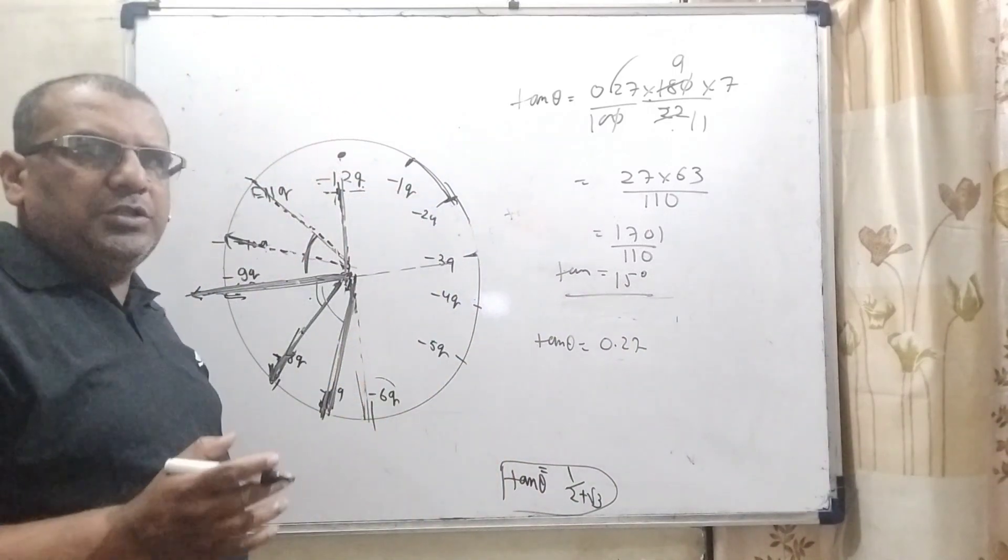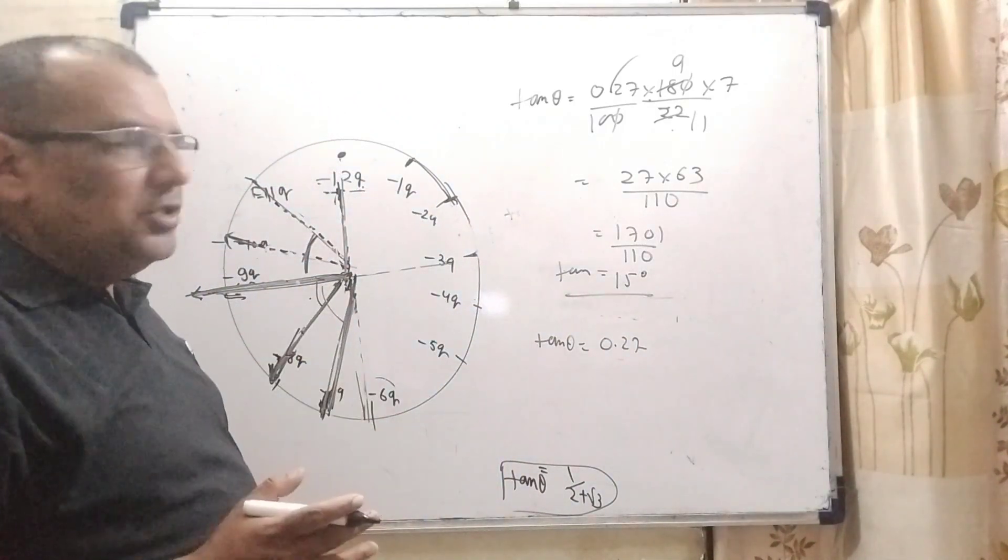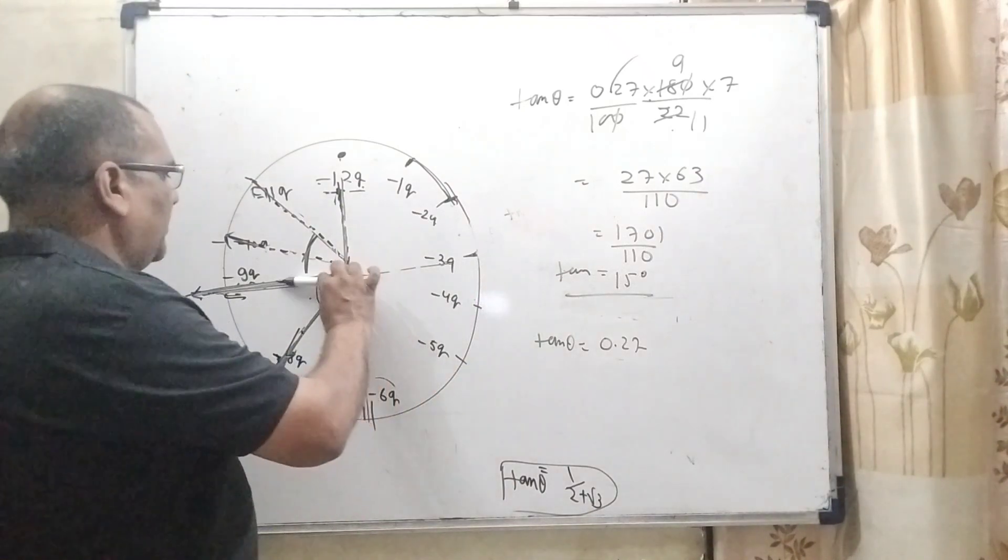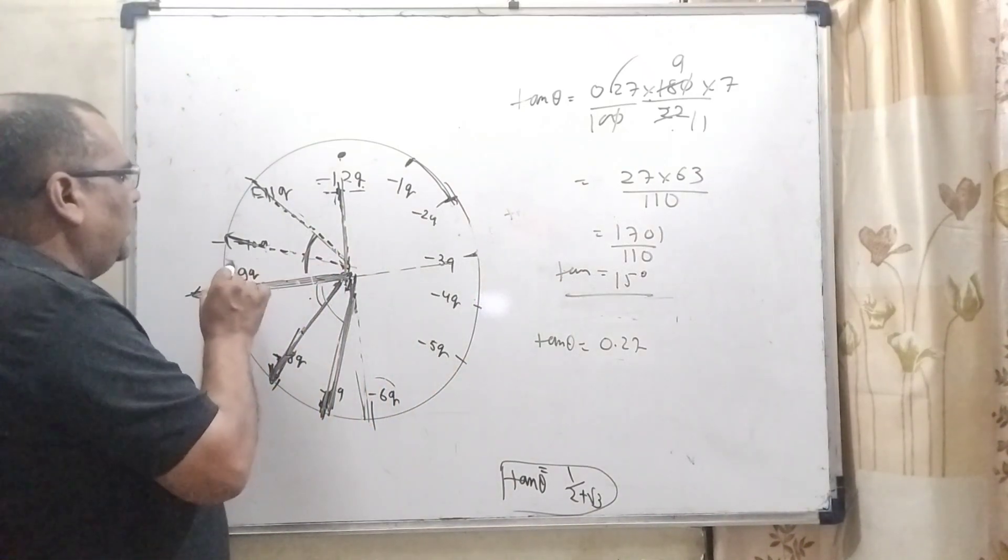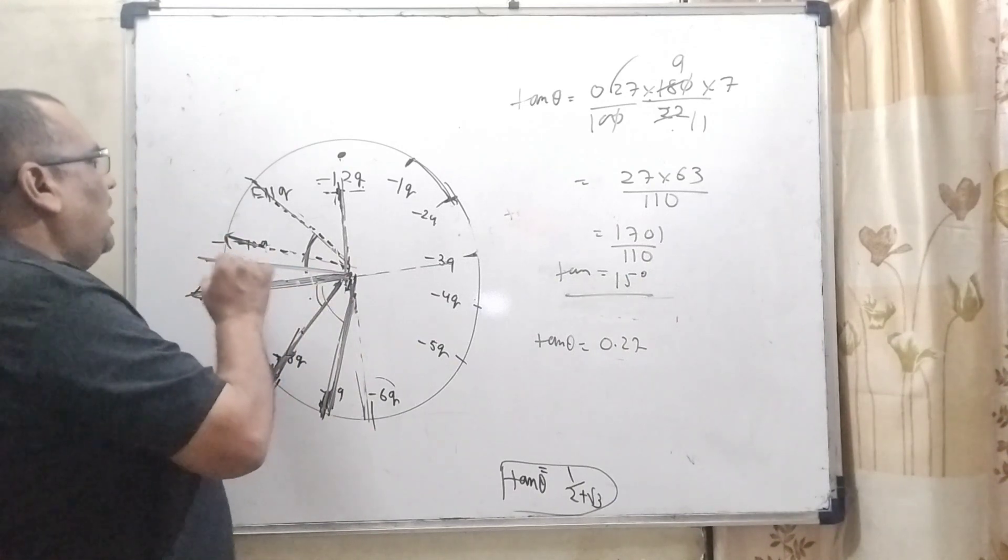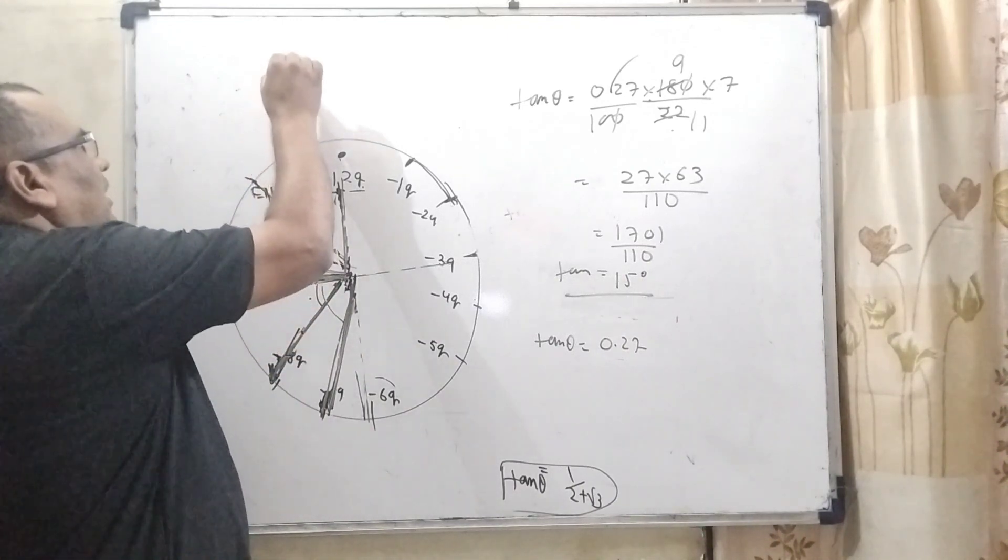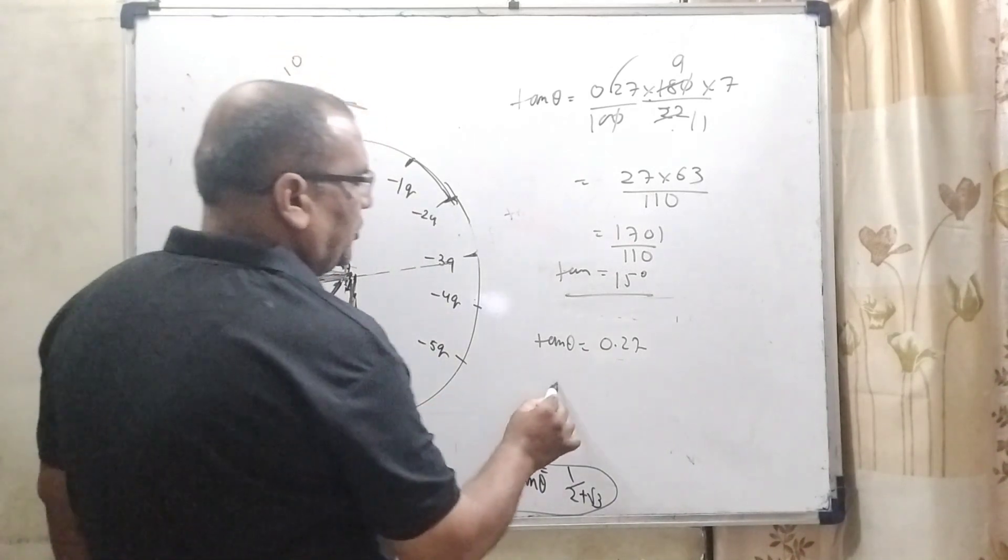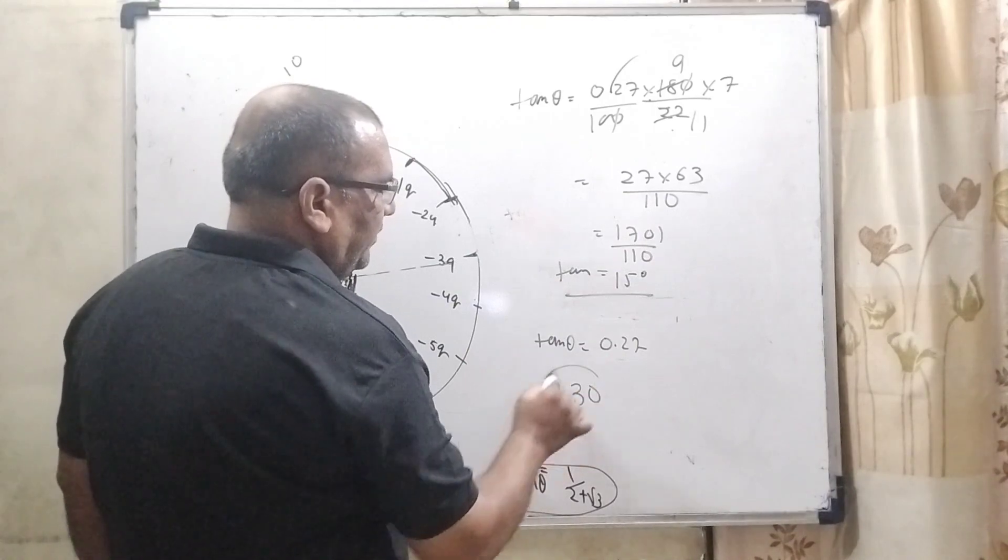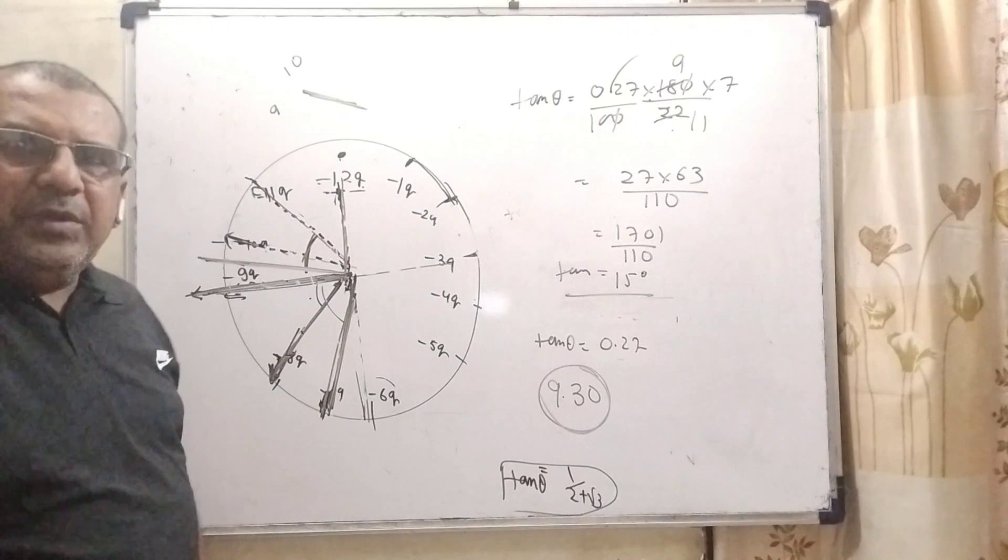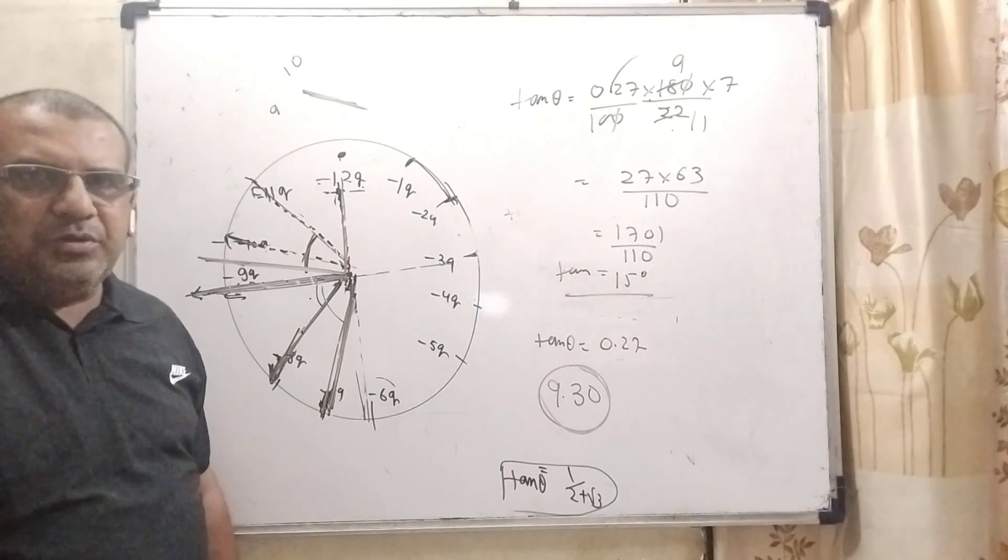And here given in the question, here our hand shows the net electric field. So here net electric field from the baseline that is 15 degree from the baseline. It means the hour hand comes between 9 and 10. It means the time approximately shows 9:30. I hope so you understood this question.